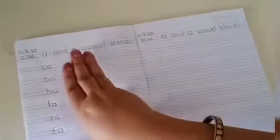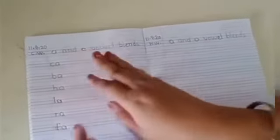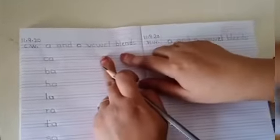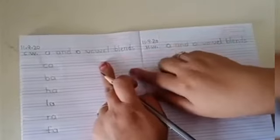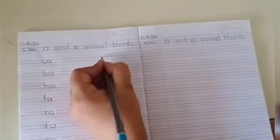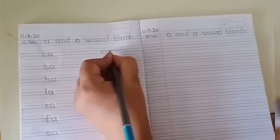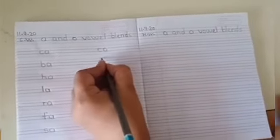Now you will leave three finger space and then we are going to write O vowel blends. So we will start with caw, ba.